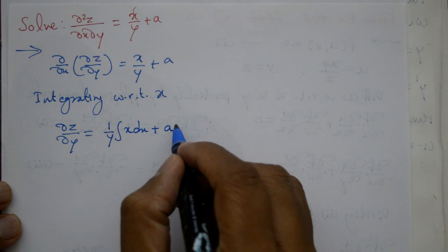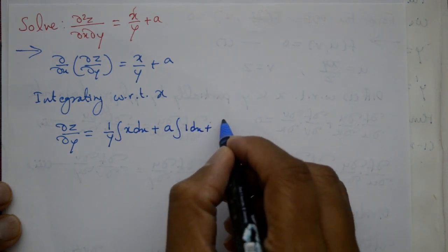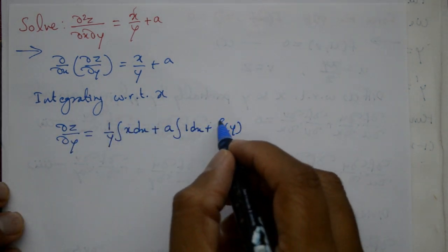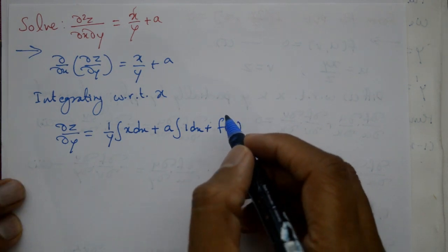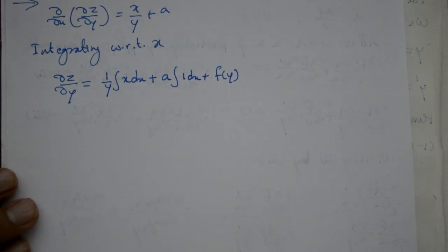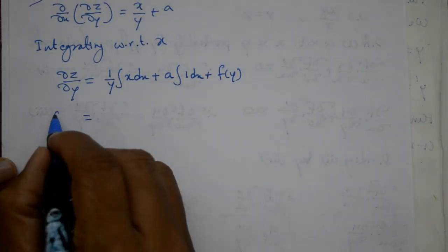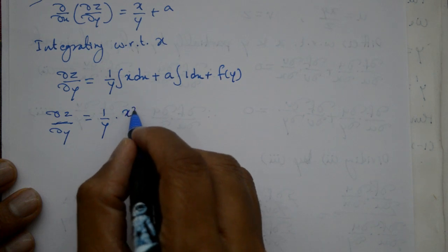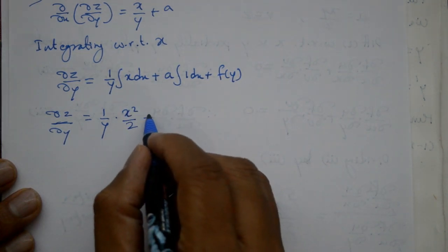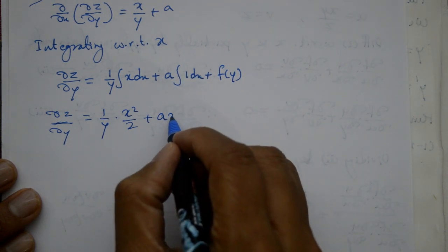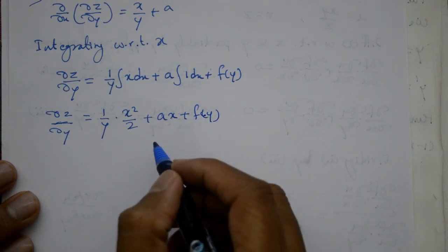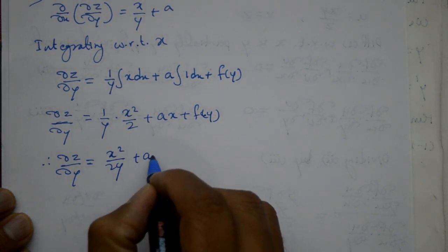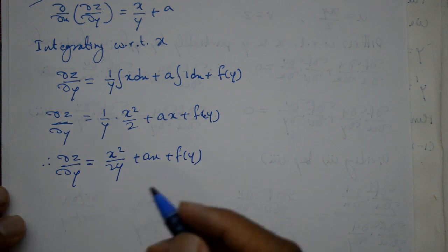f(y) is an arbitrary function. So dz/dy = (1/y) · (x²/2) + a · x + f(y). That is, dz/dy = x²/(2y) + ax + f(y). Now we will integrate once again.